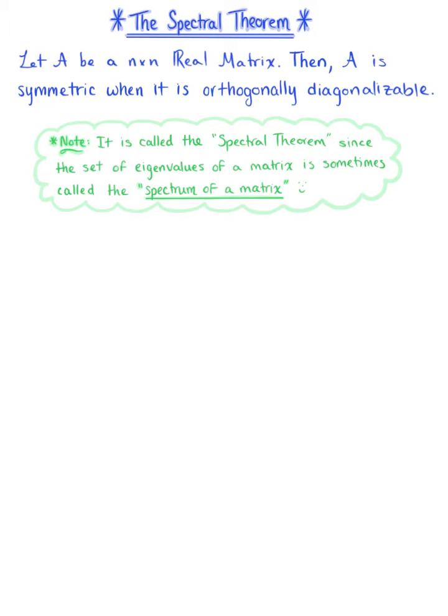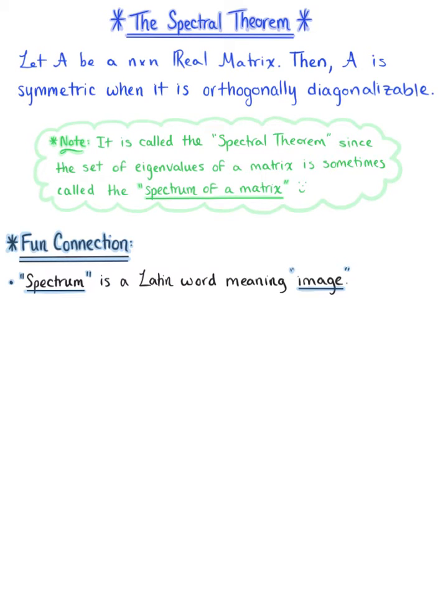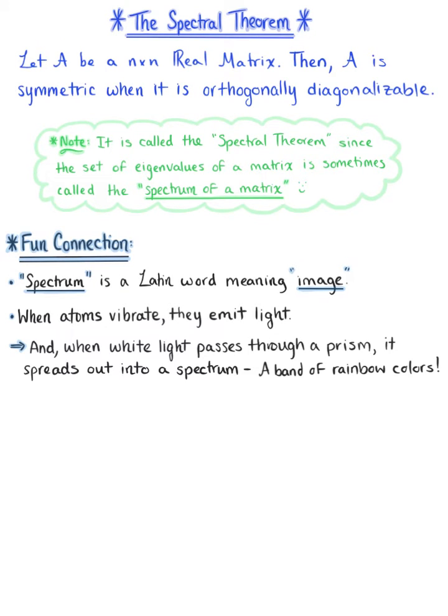So to help us better understand this, let's consider the following fun connection. Keep in mind that the word spectrum is a Latin word meaning image. When atoms vibrate, they emit light. When white light passes through a prism, it spreads out into a spectrum, a band of rainbow colors.